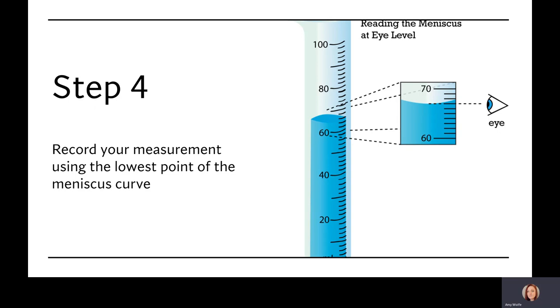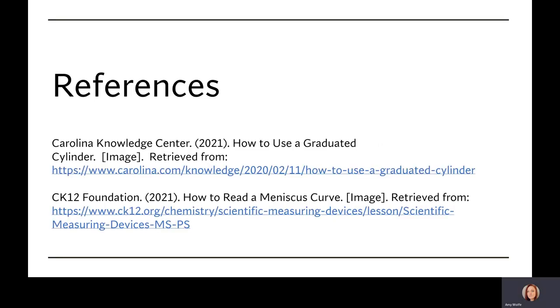Locate the closest whole measurement below the surface of the liquid, then count the number of segments up to the line nearest the meniscus. Make sure you record your measurement at the lowest point of the meniscus curve. Congratulations, you have successfully measured using a graduated cylinder.